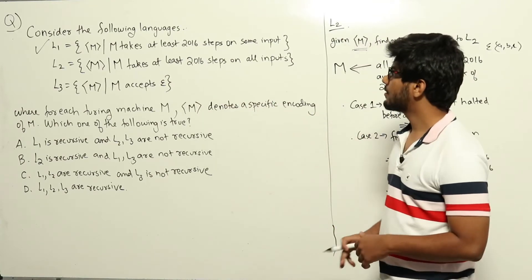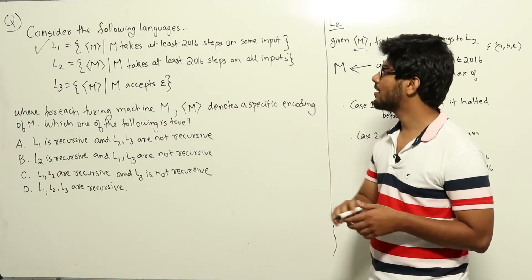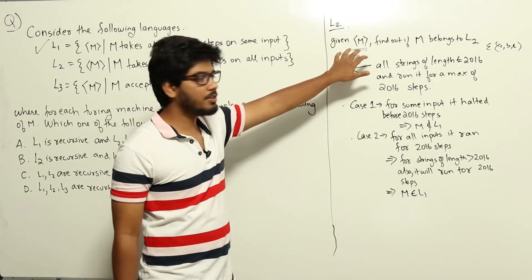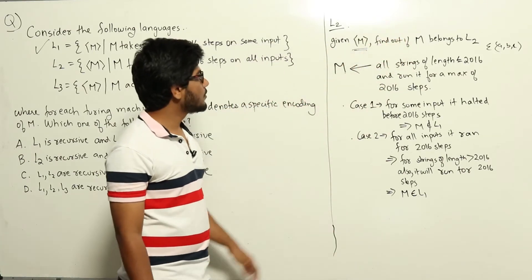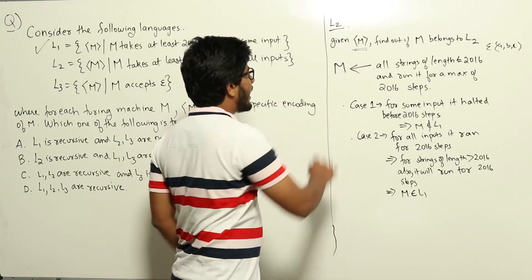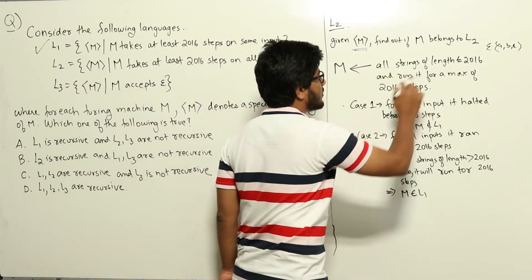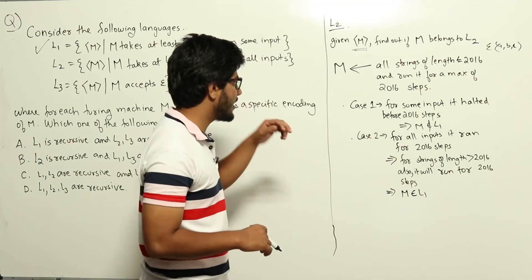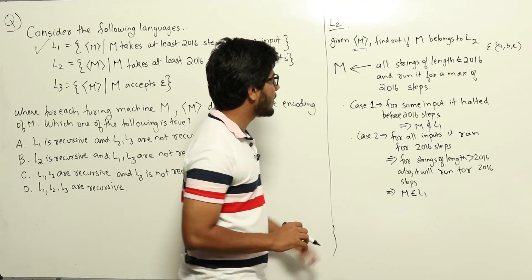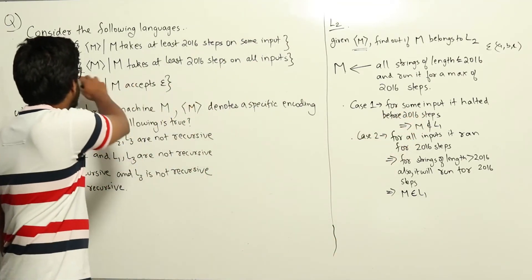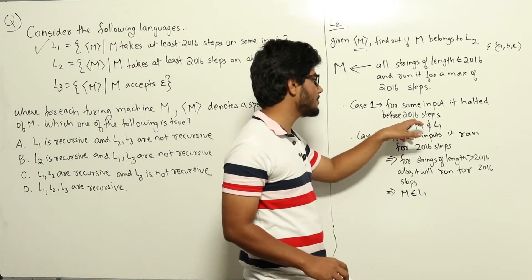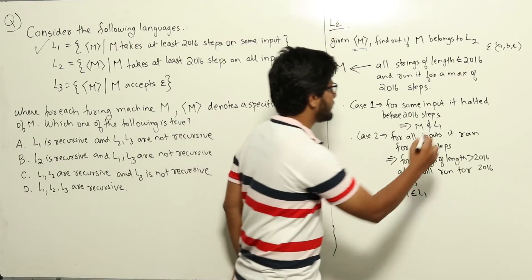Now let's look at language L2. We apply the same procedure as for L1 with a small variation. For a given encoding of Turing machine M, we design a new Turing machine that inputs all strings of length less than or equal to 2016 into M and runs M for a maximum of 2016 steps. Case 1: for some input, M halted before 2016 steps — then clearly M does not belong to L2, since L2 requires at least 2016 steps on all inputs.